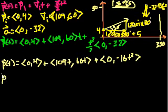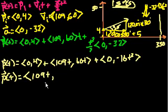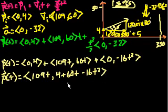So the position at any point t. So let's add all the x components of the vectors. 0, 109t, 0. So we just get 109t. And then what's the y components? 4 plus 60t minus 16t squared. And there we go. We've defined the position vector as a function of any time.